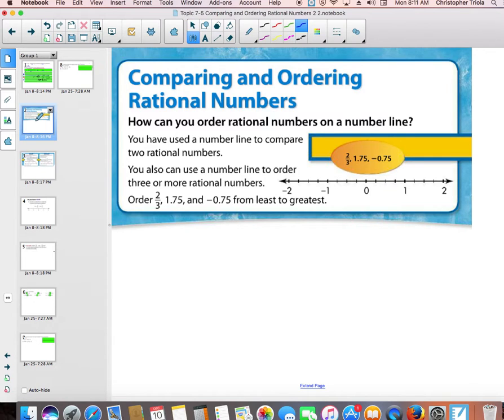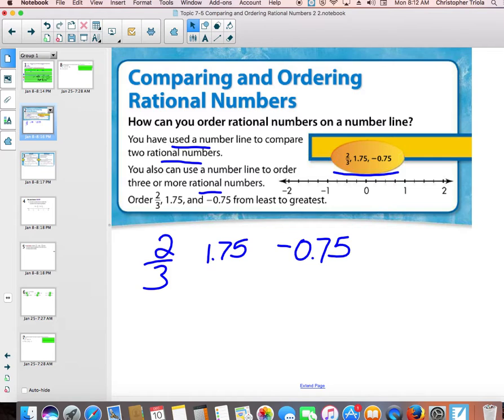They're talking about comparing rational numbers, and they give you some rational numbers to compare. It says you have used the number line to compare two rational numbers. You can also use the number line to order three or more rational numbers. So the rational numbers they give you are 2/3, 1.75, and -0.75. Now, you don't have to do anything if you take the time to look at those, do you? Because right away, if you say, thinking of the number line, left is less, right is greater, do we have any negative numbers on there? We do, right?